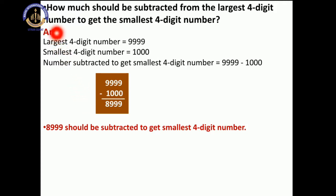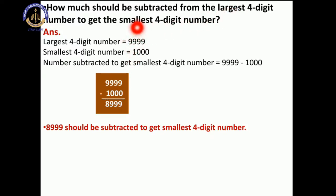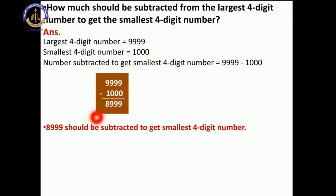So next: how much should be subtracted from the largest 4-digit number to get the smallest 4-digit number? The largest 4-digit number is 9999 and the smallest 4-digit number is 1000. So 9999 minus 1000 gives us 8999. So 8,999 should be subtracted to get the smallest 4-digit number, that is 1000.